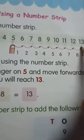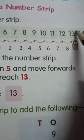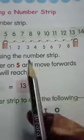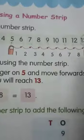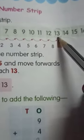After moving 8 forward steps, we are reaching at number 13. That means, 5 plus 8 is equals to 13.